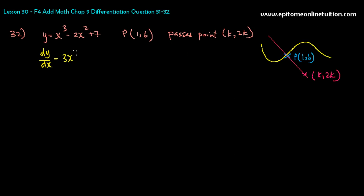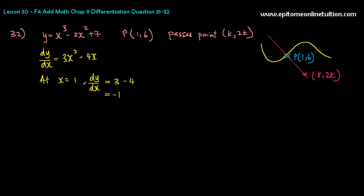At the point when x is 1 — this is where the point P is — dy/dx would equal 3 times 1 is 3, minus 4 times 1 is 4, so dy/dx equals negative 1. Remember, dy/dx always refers to the gradient of the tangent. So m of the tangent is negative 1. Therefore, the gradient of the normal would be the inverse — 1 over 1 — but positive now. So m of normal is 1.